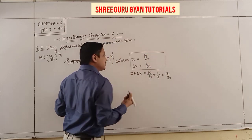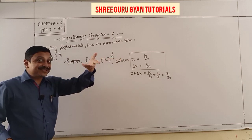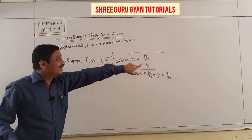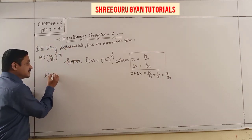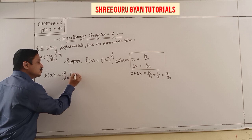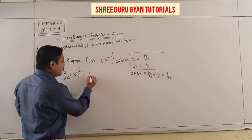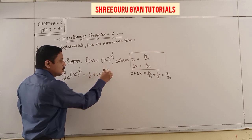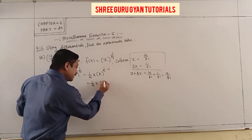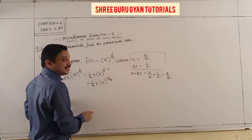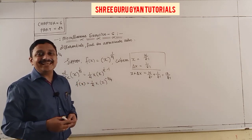Now f'(x) = d/dx of x^(1/4), applying the simple derivative: (1/4)·x^(1/4 - 1) = (1/4)·x^(-3/4). Our first derivative is easily done.